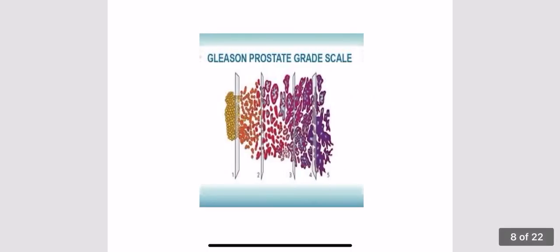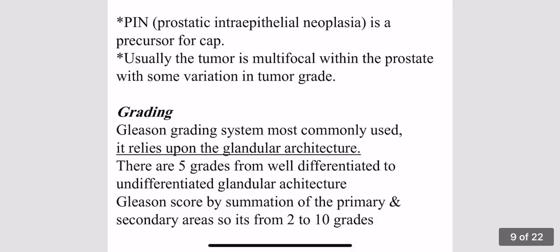Histopathologically, we depend on the architecture. Carcinoma of the prostate differs from other malignancies in which we depend on cellular changes in the cytoplasm and DNA. However, in carcinoma of the prostate we depend on the glandular architecture. We use what is called the Gleason grade, which has five grades according to the degree of architectural changes — from minimal, which is grade one, to severe, which is grade five. The changes are usually not uniform in the prostate; we find more than one grade in the same pathologic specimen.